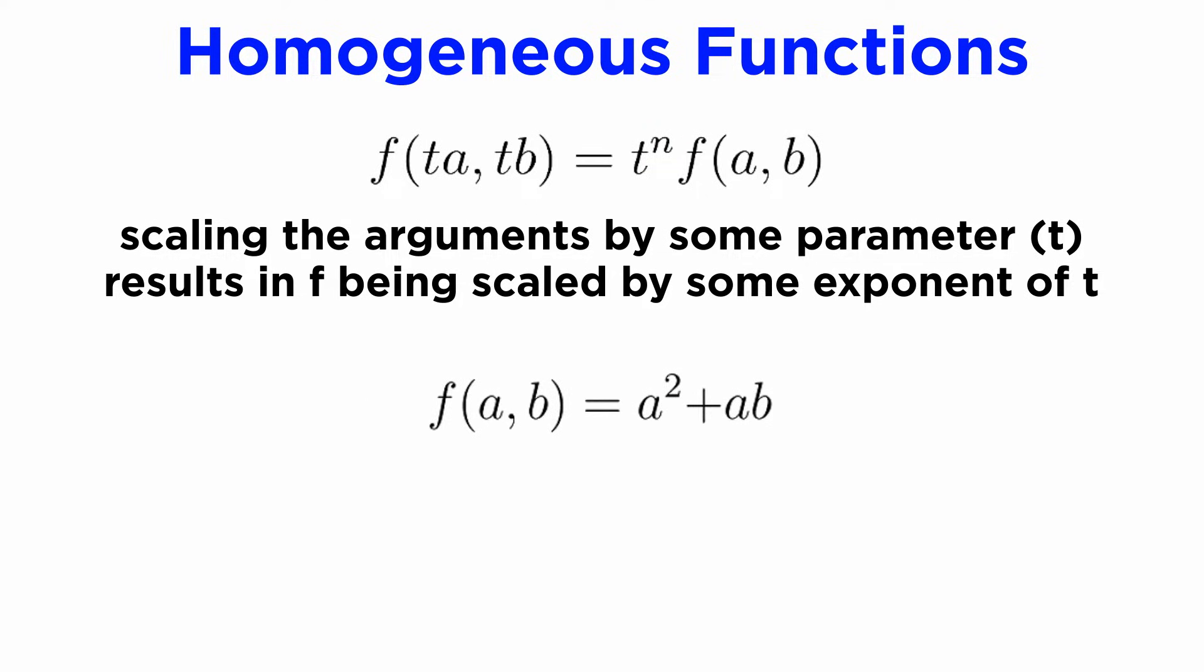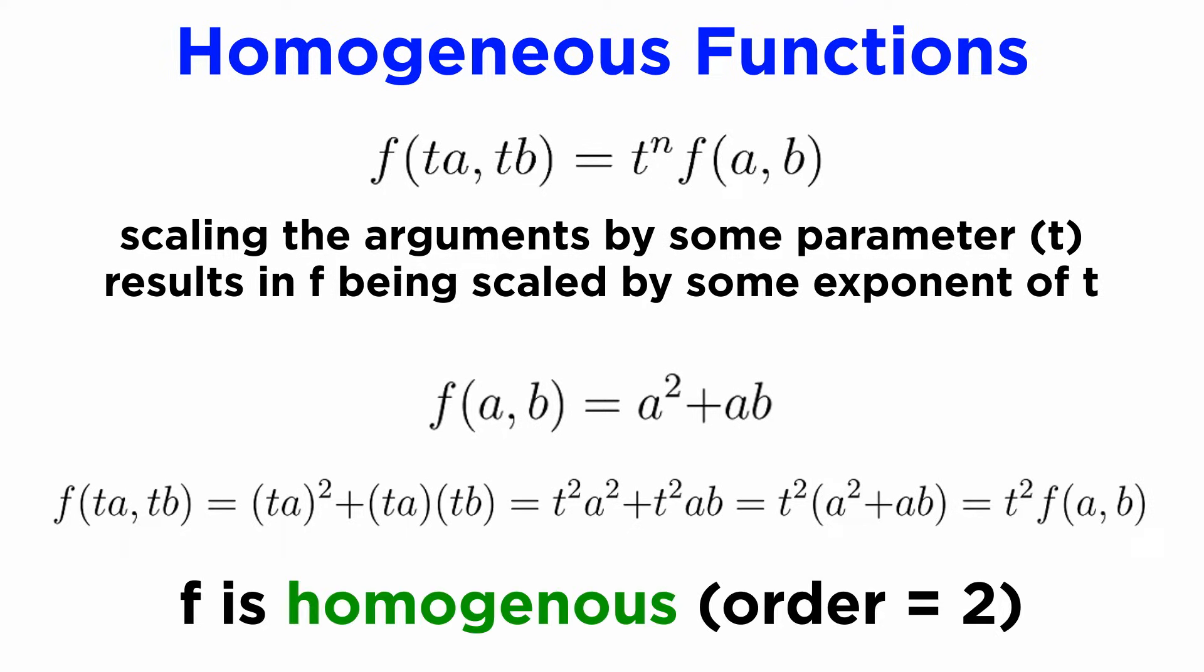For example, the function given by f of a, b equals a squared plus a times b is homogeneous because if we multiply each argument by t, we get t squared a squared plus t squared ab. Since we can factor out t squared and be left with the original function a squared plus ab, this satisfies the definition of a homogeneous function, and its order is equal to 2.